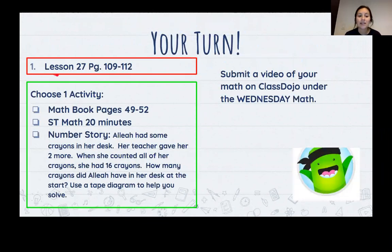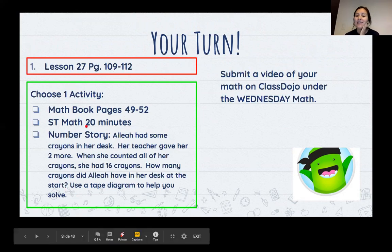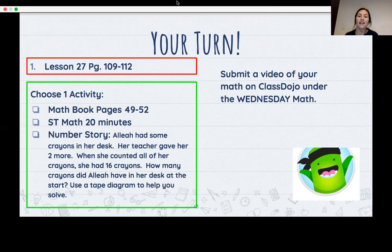Today, you are working on Lesson 27, page 109 through 112. You can choose one activity after you have finished this. Your three activities to choose from are math book, page 49 to 52. ST Math for 20 minutes. If you want to do Class Hero or Zerm, that's okay too. Or your number story. So you're going to do your lesson at the top, the one in red. And you're going to pick one more activity. Then please submit a video of your math on Class Dojo under the Wednesday math. If you have any questions or if you need help with anything, please, your parents can call me or text me. And we can chat on the phone. Or you can send a little message on Class Dojo. Good luck.